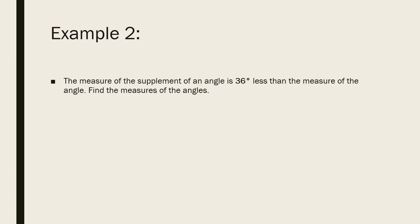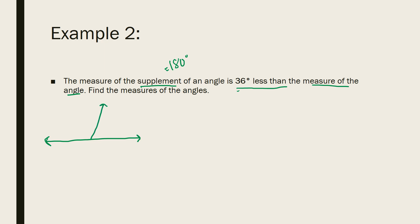In example 2, we have: the measure of the supplement of an angle is 36 degrees less than the measure of the angle. Find the measures of the angles. Let's draw a picture. I'm going to draw this on a line — though they don't have to be adjacent. Here are my two angles. I'll label the diagram A, B, C, and D.